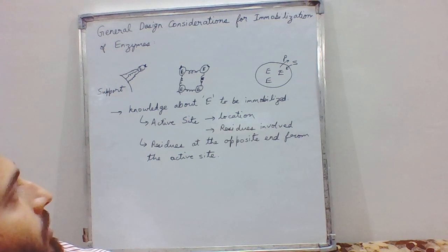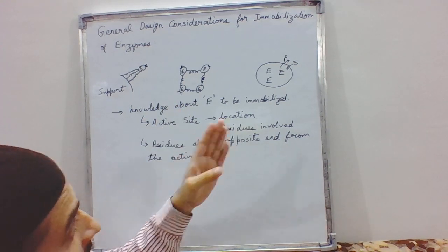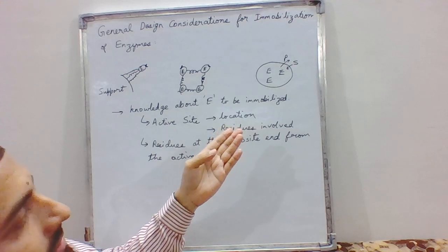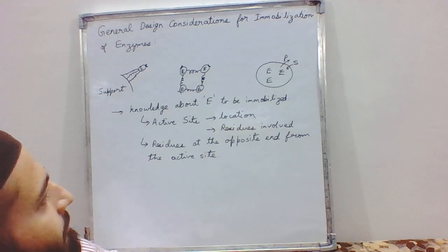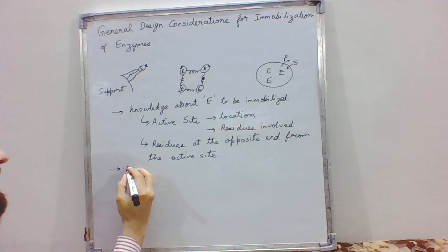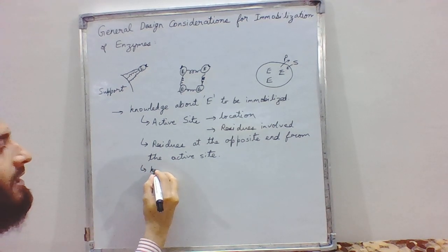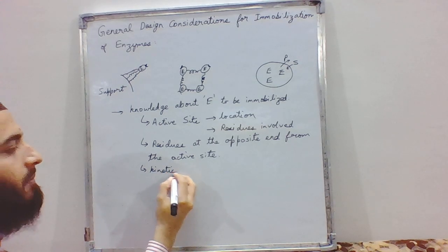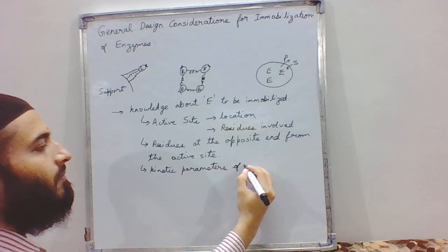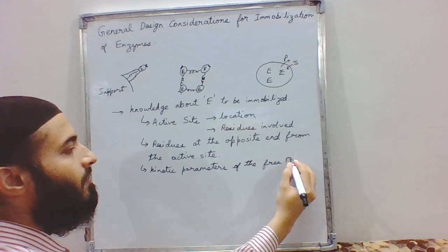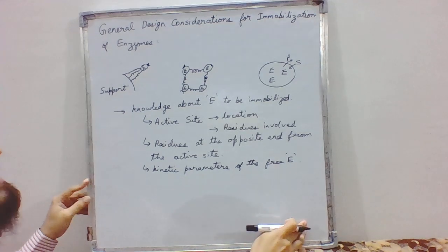When we are clear on which residues we can attach our enzyme to the support — or with each other using cross-linking methods — in the entrapment method we need not focus as much on these properties. However, we must know about the kinetic parameters of the free enzyme.